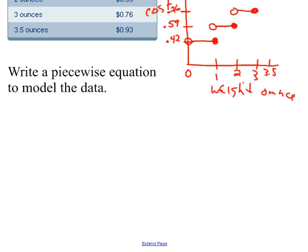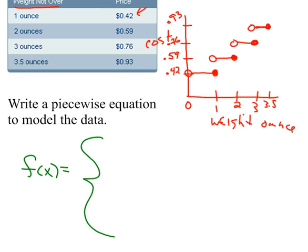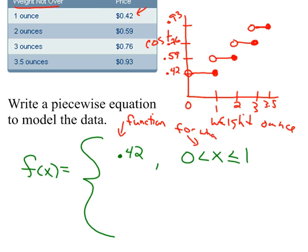I can write an equation to model this. When we write a piecewise equation, we call it f of x with a big bracket. f of x is represented by different pieces. The first y-value is 42 cents, and that happens when zero is less than x, which is less than or equal to one ounce. The left side is the function value; the right side specifies the inputs.